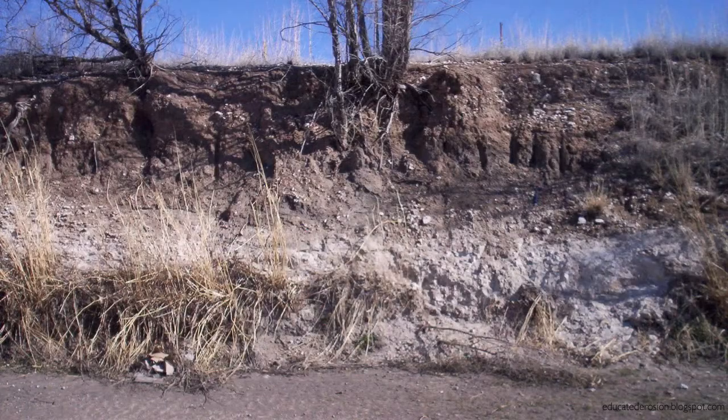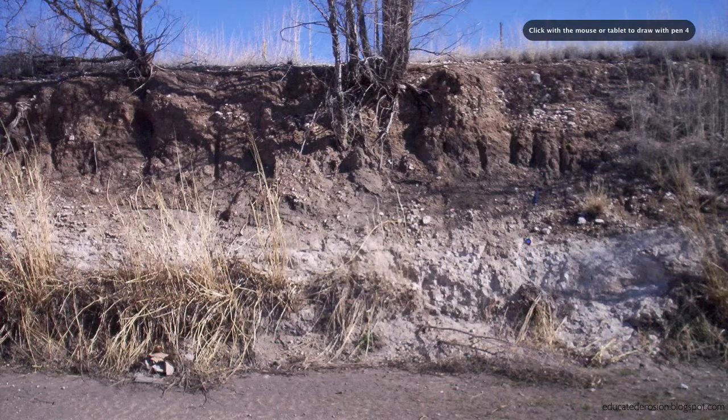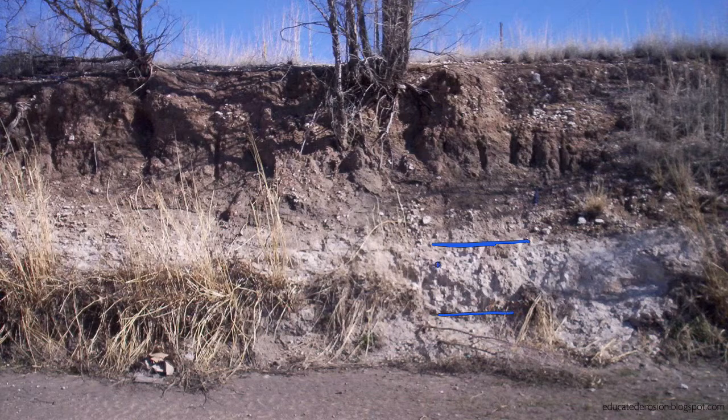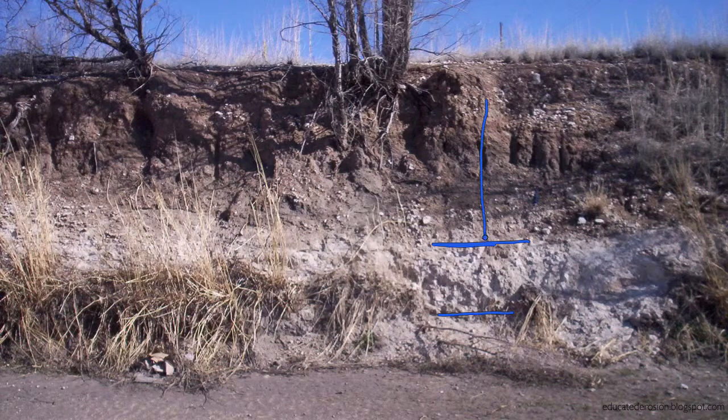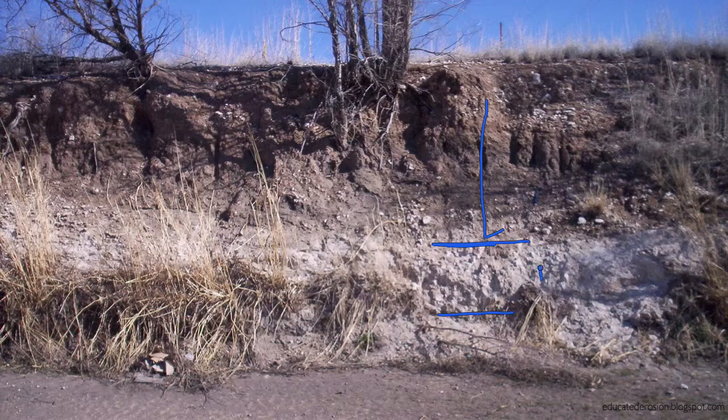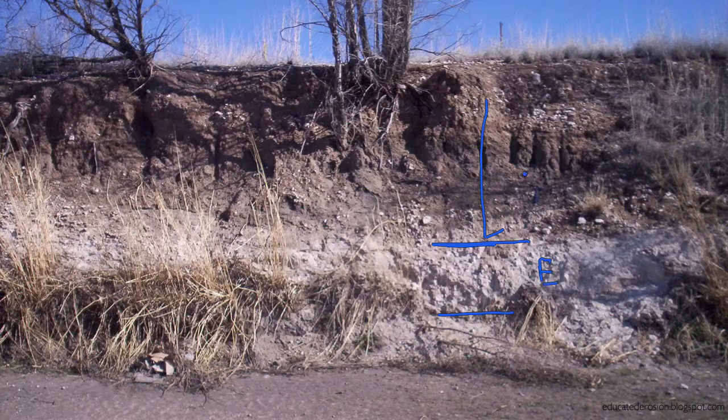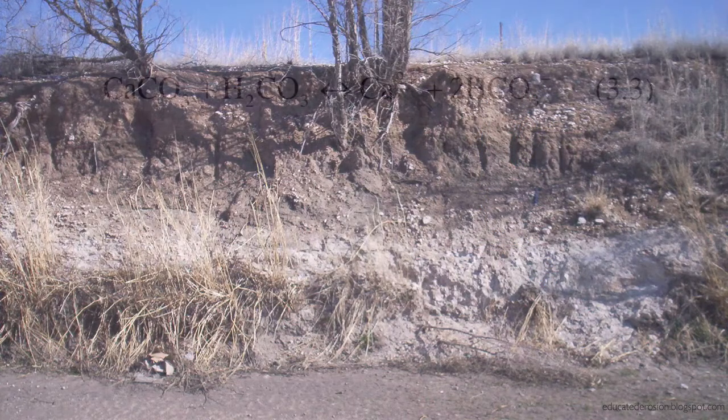Now, another example of where downward movement is important is in a caliche. And caliches are calcic horizons. It's where you have calcium carbonate that forms in a specific horizon. Now, you tend to have caliche in relatively dry areas, in arid soils, and your caliche layer is this hard white layer right here, relatively impermeable, tends to be pretty hard. And that happens when you have downward movement, downward leaching of material that then precipitate out. And again, this would often be considered an E horizon with an A horizon above it.